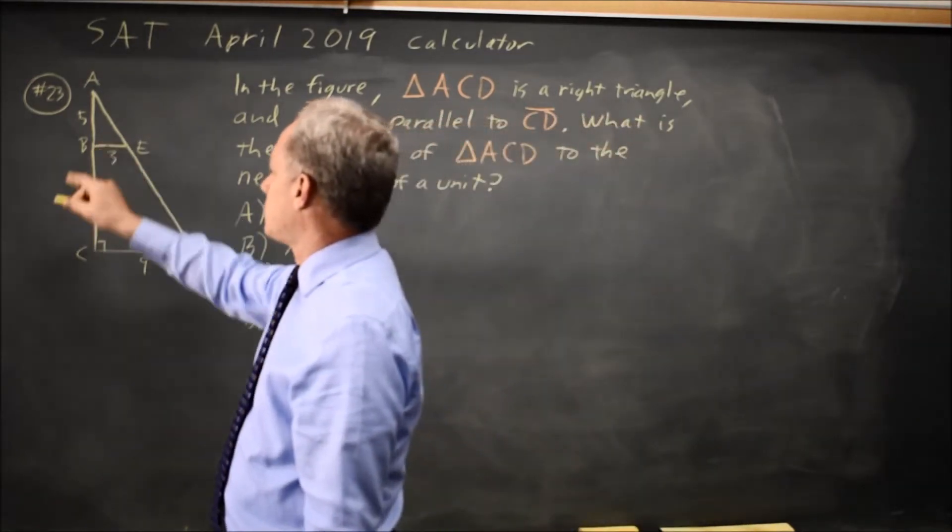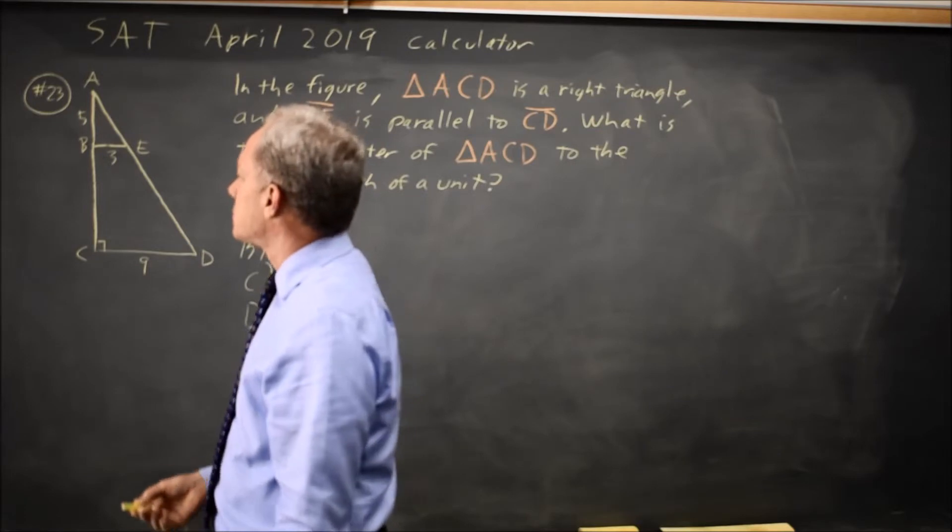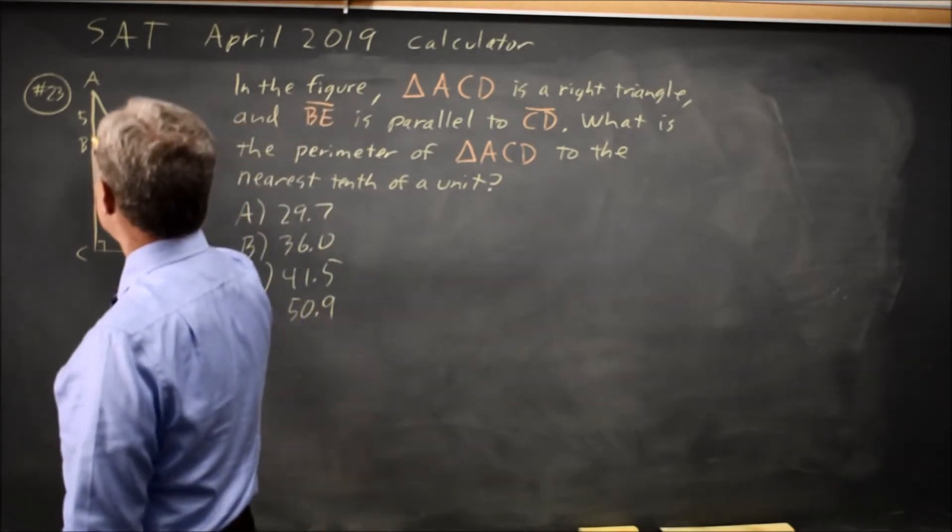Since lines CD and BE are parallel, these are similar triangles with a right angle here.